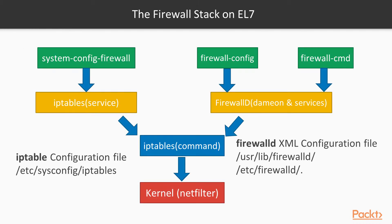The firewall stack on EL7: both IPTables and FirewallD use IPTables to talk to the kernel packet filter. With the IPTables service, every single change means flushing all the old rules and reading all the new rules from /etc/sysconfig/iptables. With FirewallD, there is no recreating of all the rules — only the differences are applied. Consequently, FirewallD can change settings during runtime without existing connections being lost.